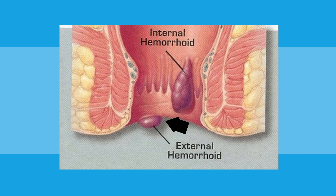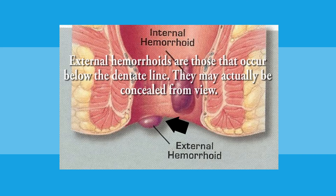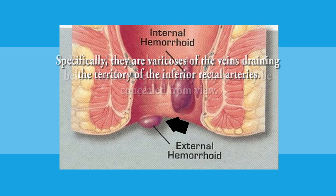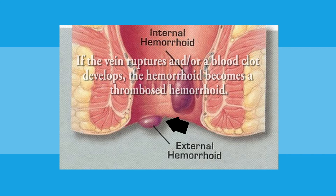Our next type of hemorrhoid is the external hemorrhoids. External hemorrhoids are those that occur below the dentate line. They may actually be concealed from view as well. Specifically, they are the varicose veins draining the territory of the inferior rectal arteries. If the vein ruptures and or a blood clot develops, the hemorrhoid may become a thrombosed hemorrhoid.